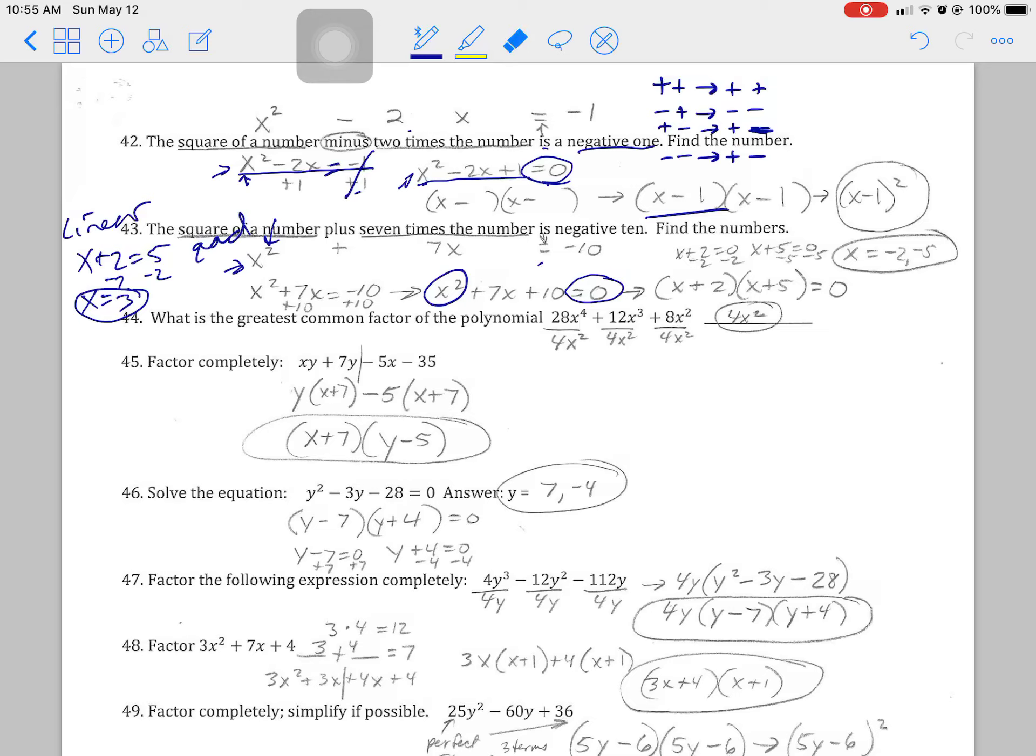So this one, x squared plus 7x equals negative 10. That negative 10 needs to be moved over to the other side. So I can then factor. This is an easy factor as in it has a positive positive. Therefore, it's positive positive in my answer. Don't forget to have these down.